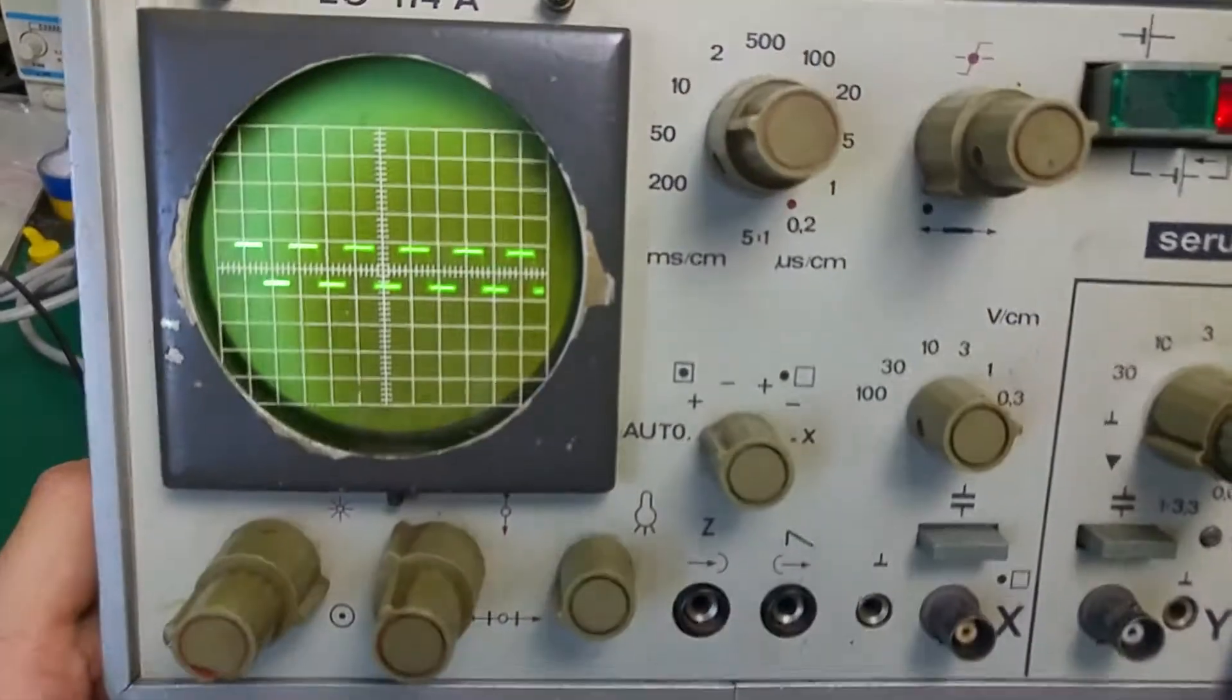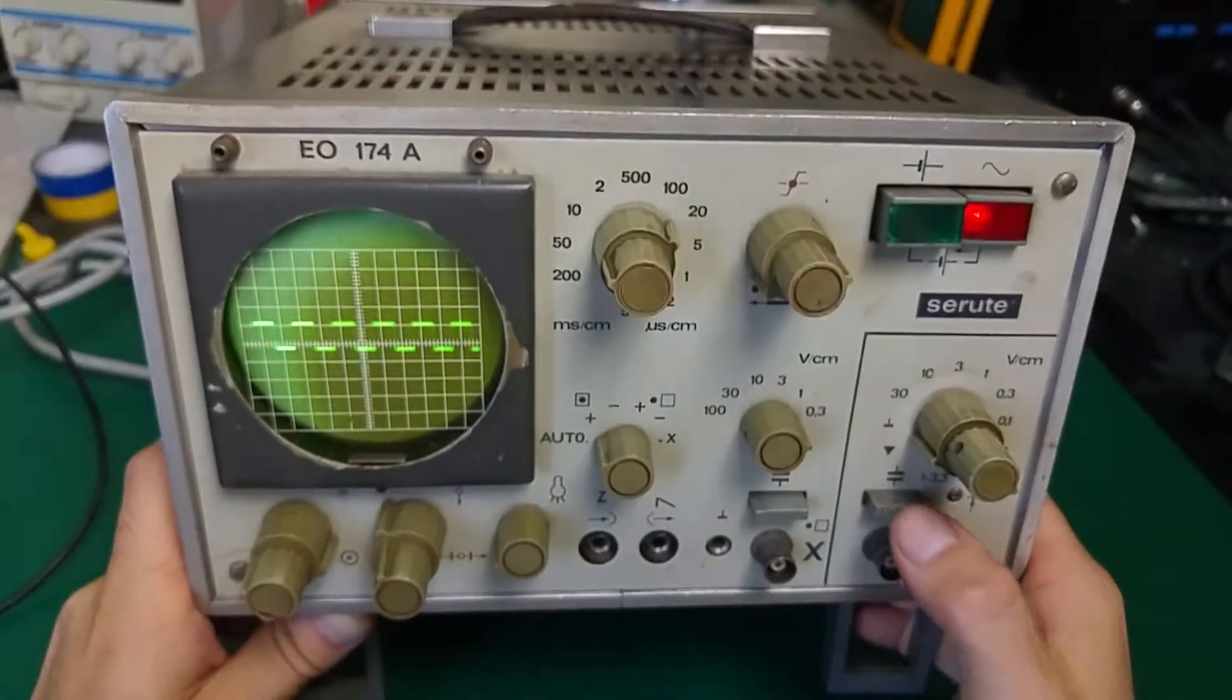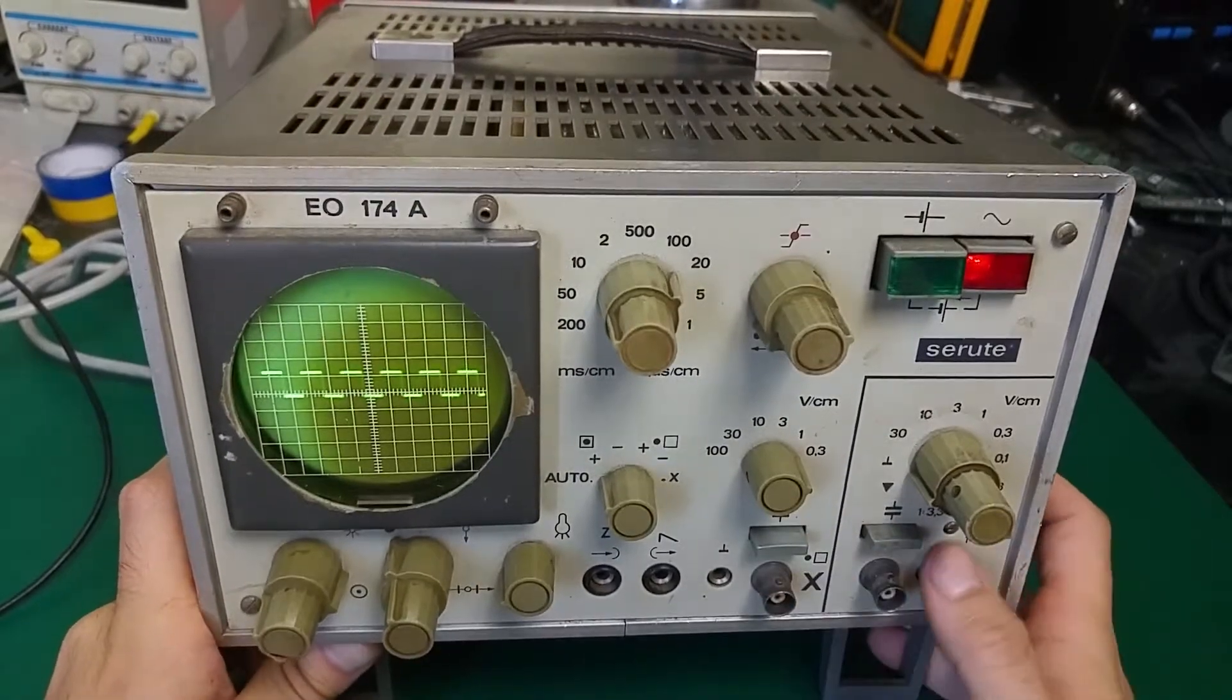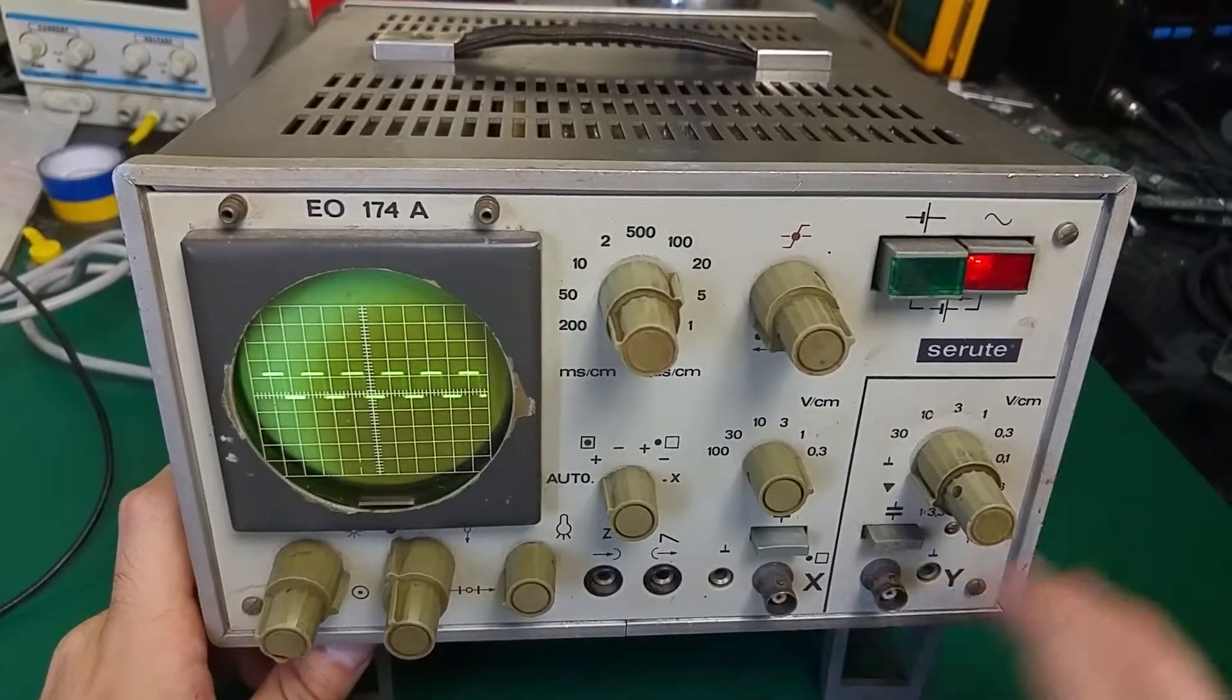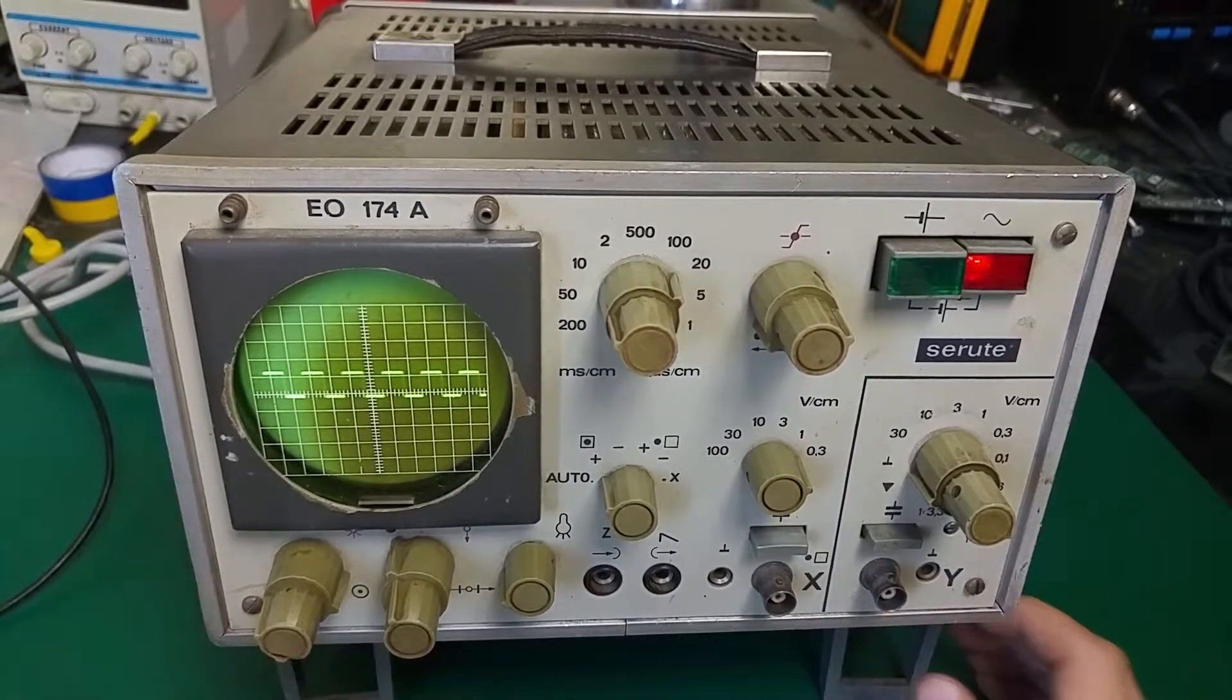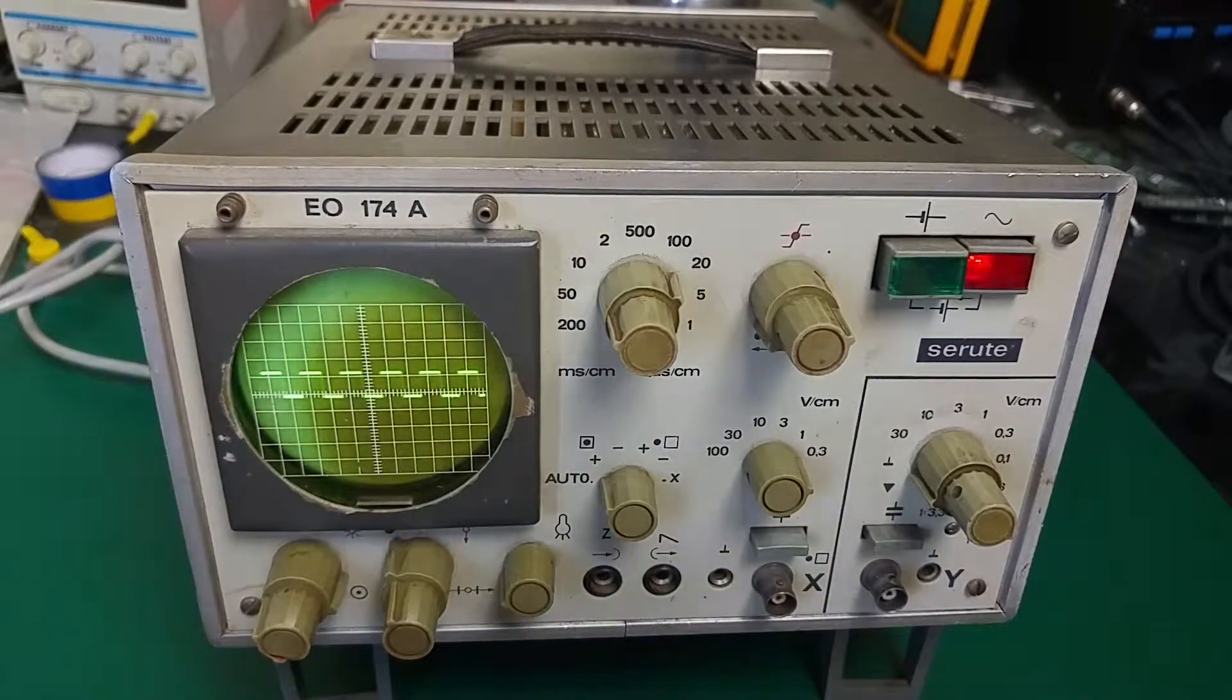As you can see, that one is probably DC coupling. If we want to get rid of the DC offset, you can add a capacitor - that's what I think. Let's try to input a signal from the external